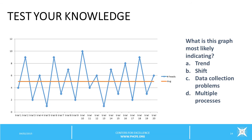And finally, what does this run chart show? Here you see data in a consistent alternating pattern: up, down, up, down, up, down. The answer is D. This chart indicates that there are potentially more than one processes in place, reflecting perhaps different staff using different procedures for the same service or process. This type of pattern would cue you to investigate what's going on.